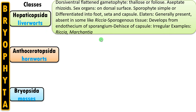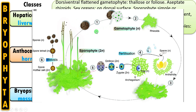Now let us understand the characteristics of the second class, Anthocerotopsida — they are called hornworts. The life cycle starts with the gametophyte which is flat, dorsiventral thallus with rhizoids. Antheridia and archegonium are the male and female reproductive structures, from which the male gamete — the sperm — and the female gamete — the egg — form. They undergo fusion forming the zygote, which later gives rise to a sporophyte. This sporophyte has a horn-like appearance; therefore this group of bryophytes is called hornworts. The sporogenous tissue or spore mother cells undergo meiosis forming haploid spores, which germinate forming the gametophyte again.